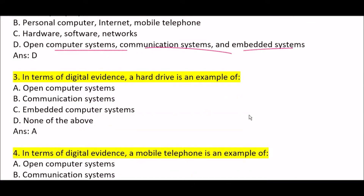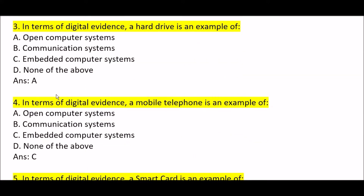Next question: in terms of digital evidence, a hard drive is an example of — Option A: open computer systems. Option B: communication systems. Option C: embedded computer systems. Option D: none of the above. Correct answer is Option A — open computer systems. In terms of digital evidence, a hard drive is an example of open computer systems.